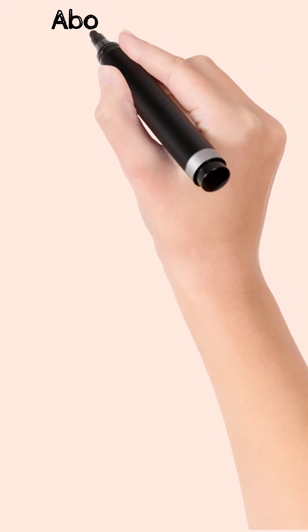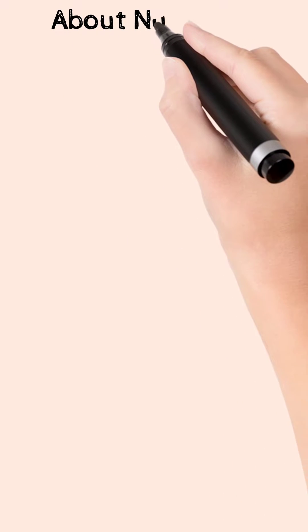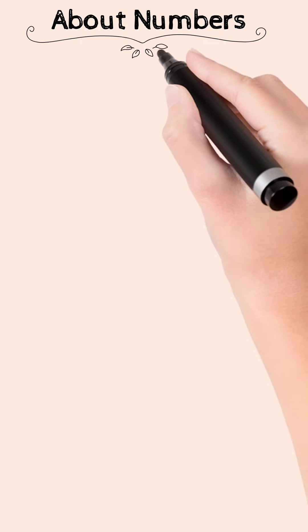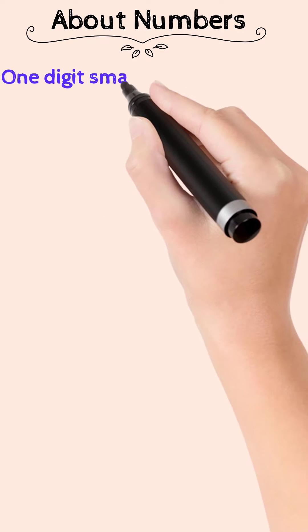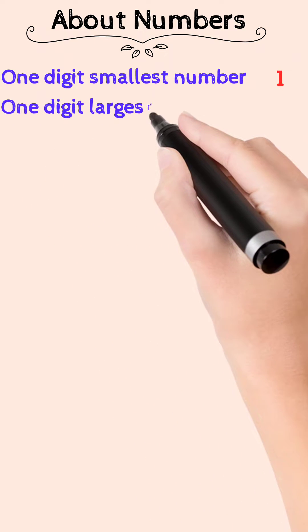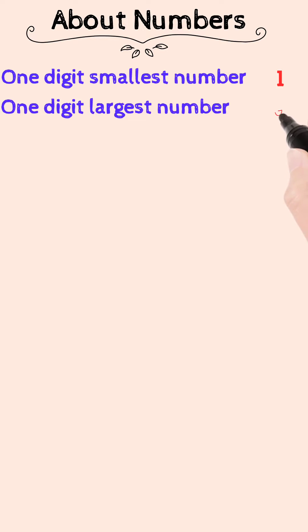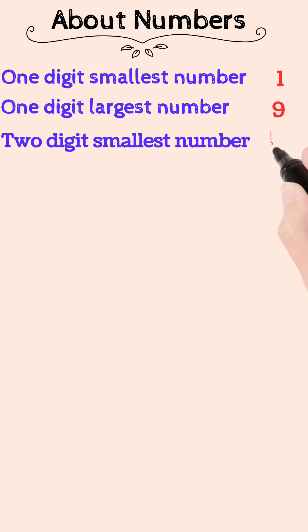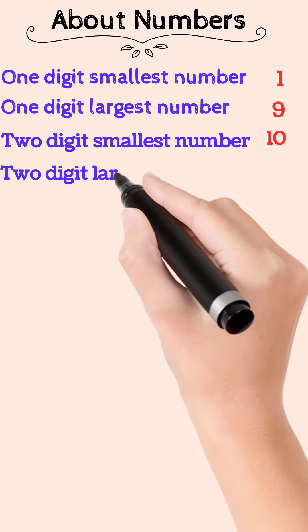Hi all, today we are going to learn about some statements of numbers. One digit smallest number is 1, one digit largest number is 9, two digit smallest number is 10, two digit largest number is 99.